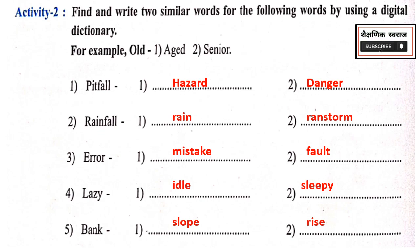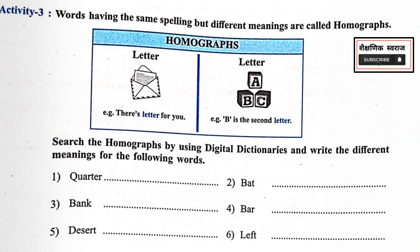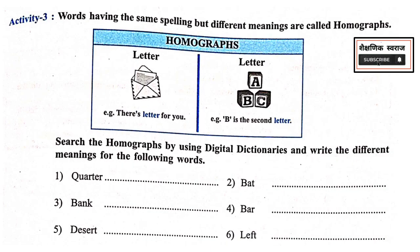Next, words having the same spelling but different meaning are called homographs. For example, Letter — 'There is a letter for you.' And Letter — 'B is the second letter.'